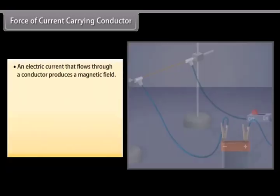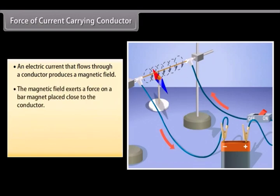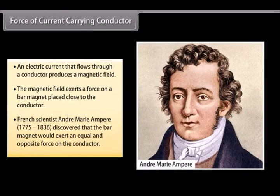Force of current-carrying conductor. We have seen that an electric current that flows through a conductor produces a magnetic field. The magnetic field so produced exerts a force on a bar magnet placed close to the conductor. French scientist André-Marie Ampere, 1775-1836, discovered that the bar magnet would also exert an equal and opposite force on the conductor.